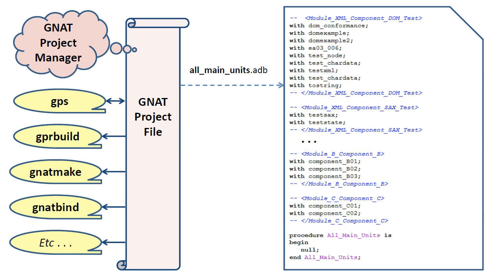The resulting executable all_main_units.exe serves no purpose other than to show it can be built — this file can be huge and should be deleted to save space. It is important to note that in a typical development cycle, more than 99.9% of all units in the release will remain unchanged and therefore do not need to be compiled. Only those units which have been changed in the workspace need to be compiled. So even in an extreme case where a developer checked out and modified 100 units, only a relatively small amount of time is required to build all_main_units, since the vast majority of build files already exist on the release.